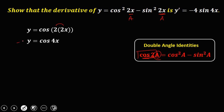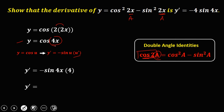Since the derivative of cosine is negative sine u times the derivative of u, y prime is equal to negative sine 4x times the derivative of 4x, which is 4. So y prime is equal to negative 4 sine 4x.